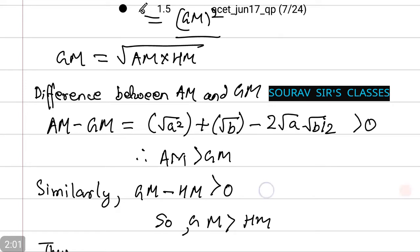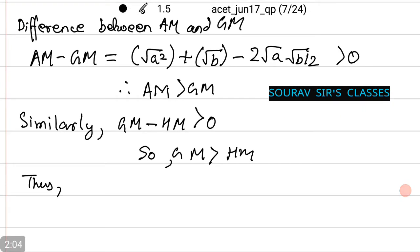Thus, AM is greater than GM. Similarly, doing the same process, the difference between geometric mean and harmonic mean, which is also greater than zero. Thus, meaning GM and HM. Let the first one be number 1, let the second one be equation 2. Thus, combining 1 and 2, we get AM greater than GM greater than HM.